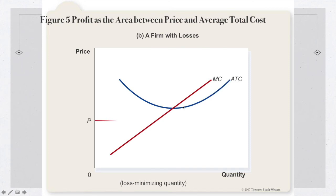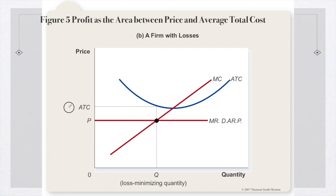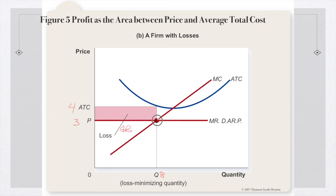If price equals ATC falls below marginal cost, the firm is actually losing money. For example, if average cost is $4, the price of the good is $3, and we're producing eight units, the firm is losing $1 per unit on eight units — total losses of $8. To show this graphically: draw marginal revenue, demand, average revenue, and price; find where it intersects marginal cost — here it intersects below ATC; mark up to ATC, draw across to the axis, and shade the area of economic losses.